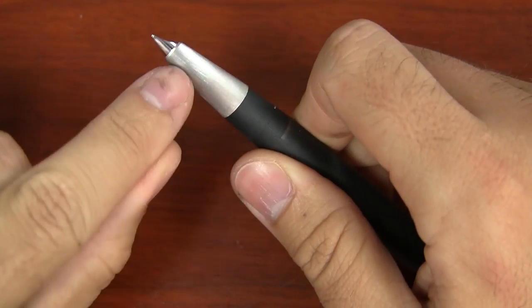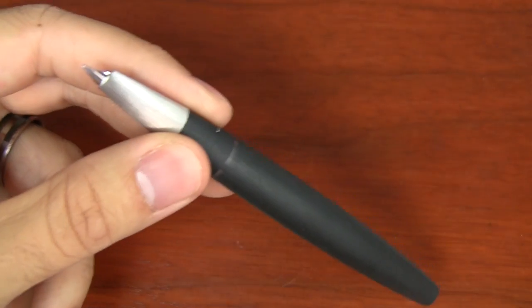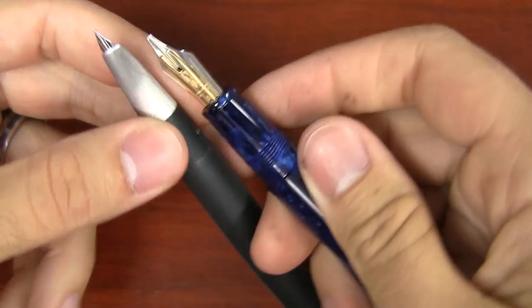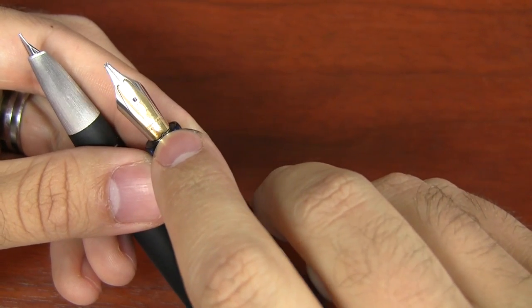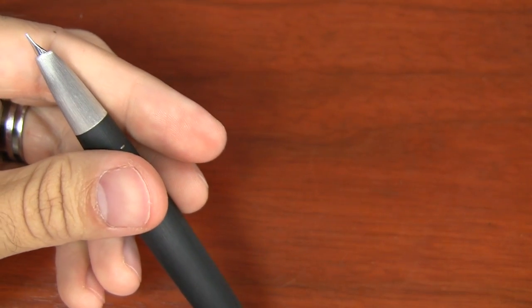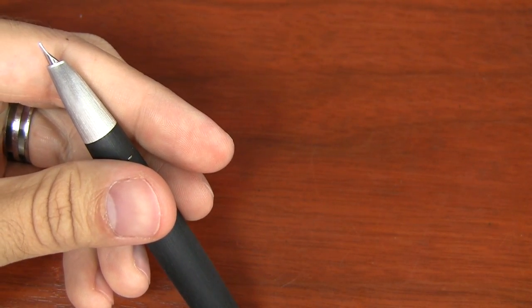But there's one downfall. You can't see the nib size. Other pens, I'll just show you this one for example. This one shows you the nib size here. It says S for stub. And a lot of pens will have their nib size right on the nib like that.